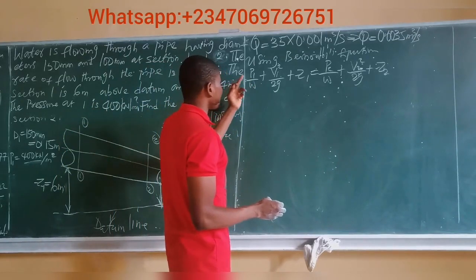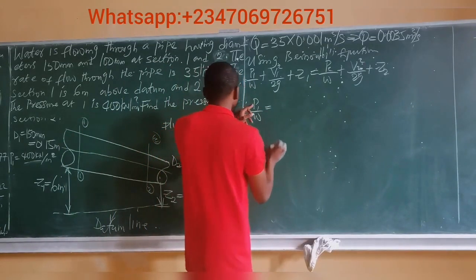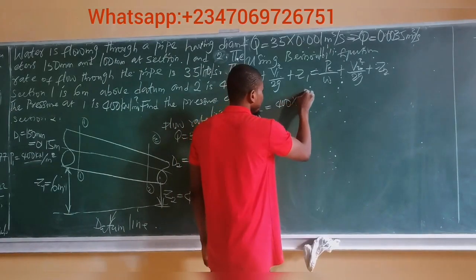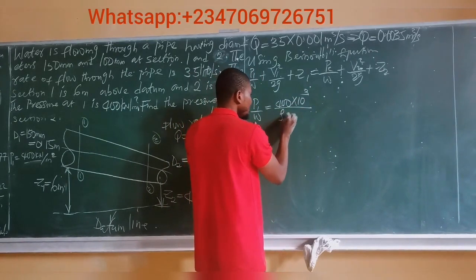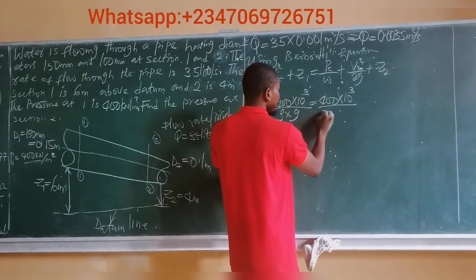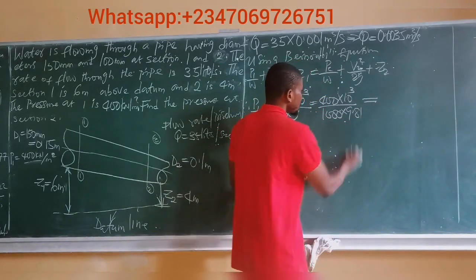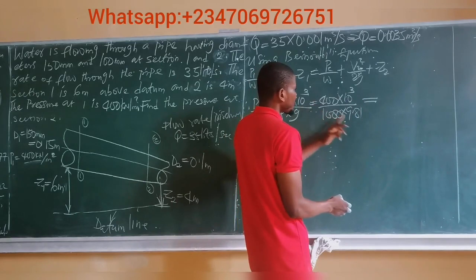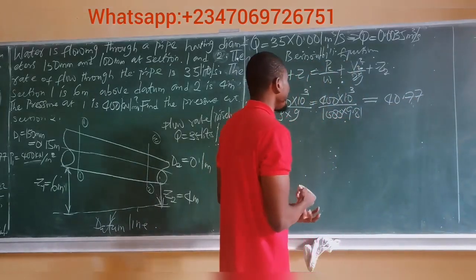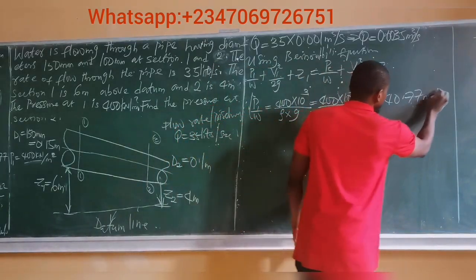We know P1, so we can find P1 over W. P1 over W equals 400 kN/m², which is 400 × 10³ divided by the specific weight. Specific weight is density times gravity: 1000 × 9.81. The 1000s cancel, giving 400 divided by 9.81, which equals 40.77 meters. This is the pressure head at section 1.